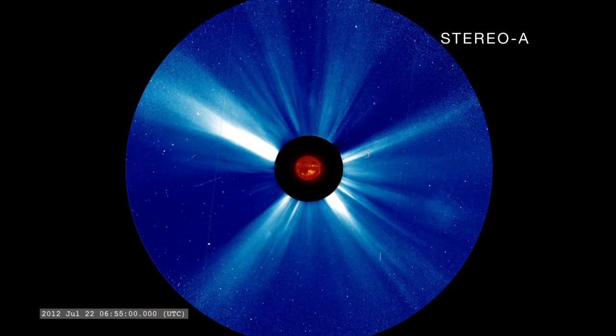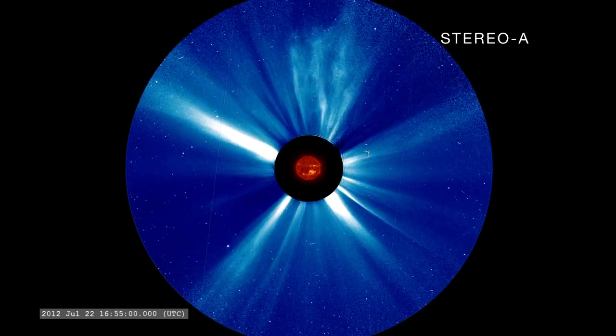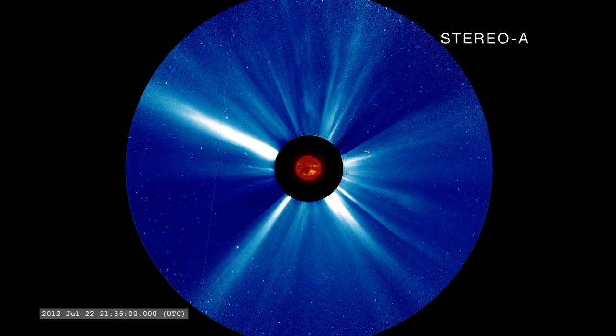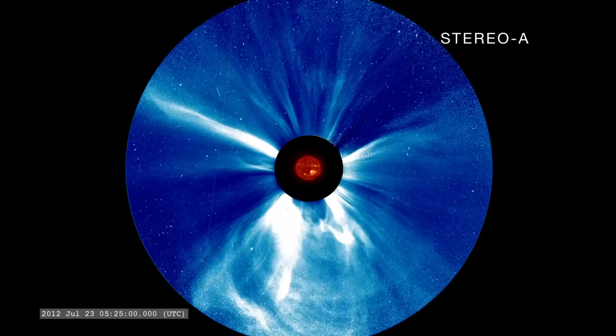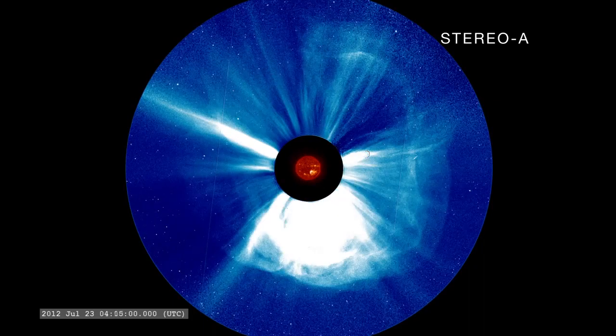The STEREO satellites also carry coronagraphs, which block the bright solar disk to make the fainter extended solar atmosphere, or corona, visible. As a result, they were able to image the actual CME as it left the Sun.